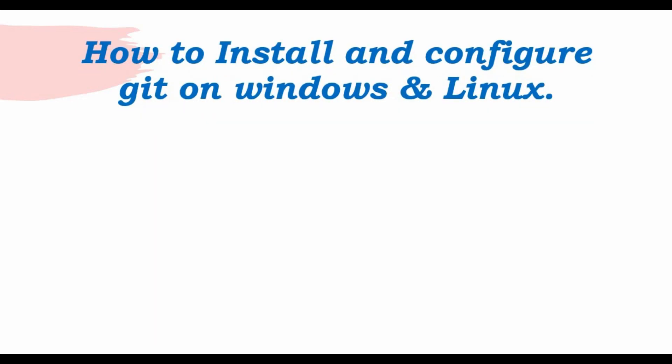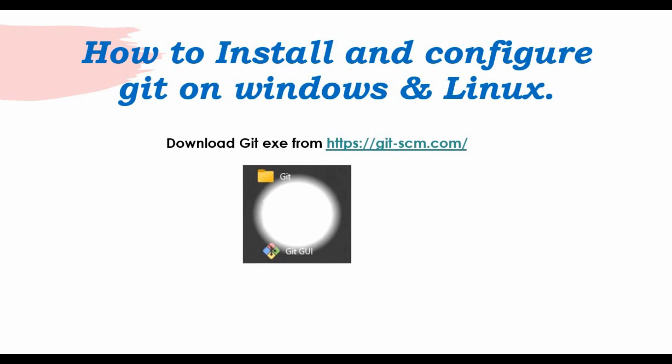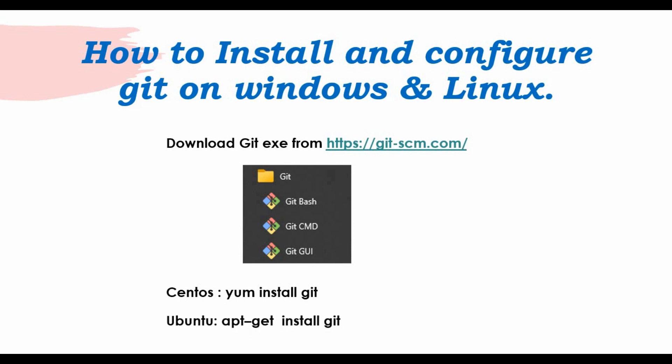In this video, we are going to specifically install and configure Git on Windows and Linux. Git helps you do version control of your software or code, which can then be pushed into GitHub, GitLab, or any remote repository. We will go to git-scm.com, download the Git exe for Windows, and install it. Once installed on Windows, you will get options like Git Bash, Git CMD, and Git GUI. We will also do the installation on CentOS using 'yum install git' and on Ubuntu using 'apt-get install git'.